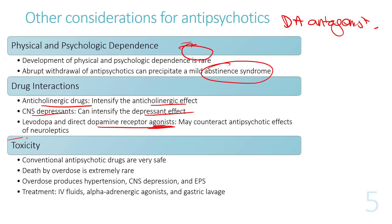Conventional antipsychotics are very safe overall. Death by overdose is rare. Overdose can produce CNS depression, EPS, and hypertension.